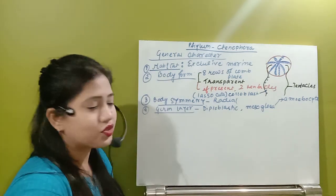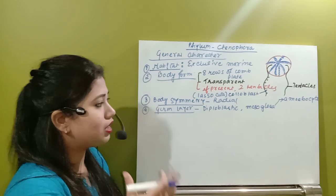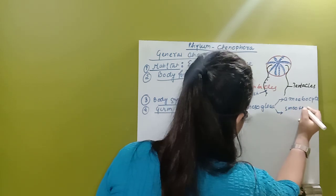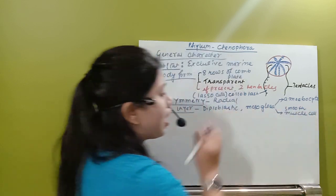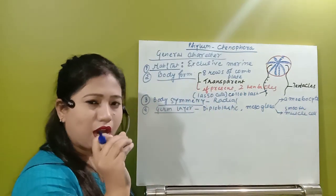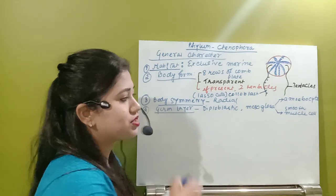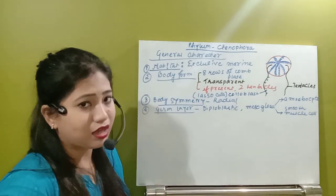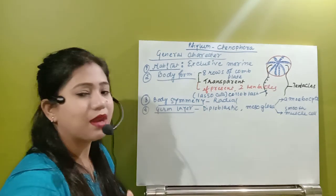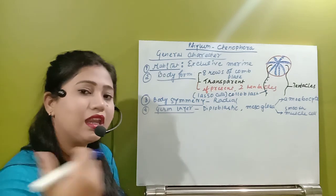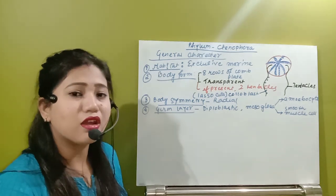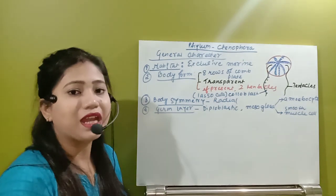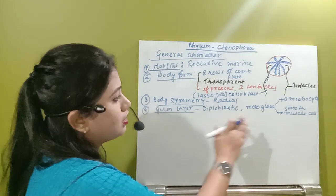These amoebocytes are present in the jelly-like non-cellular layer that is mesoglia. Along with that, smooth muscle cells are also present in the mesoglia. As compared to Cnidaria, in case of Ctenophores, the mesoglia is becoming comparatively thicker — earlier in Cnidaria the jelly-like matrix was a little thinner or more liquid, but now in Ctenophores they have a comparatively thicker mesoglia containing amoebocytes and smooth muscle cells.